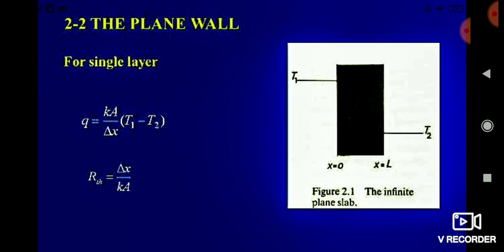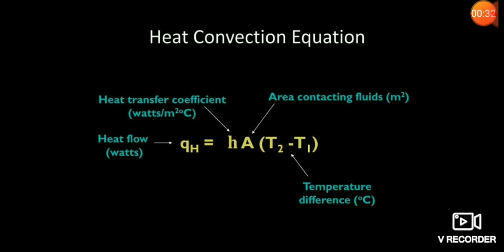In the plane wall case, when the wall length, area, and temperatures T1 and T2 on both sides are given, you can calculate both the heat transferred and the thermal resistance. For convection, the resistance formula is derived similarly by writing Q = (T2 - T1) / R, giving R_convection = 1 / (hA).